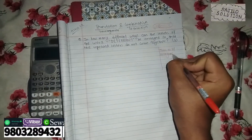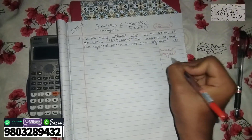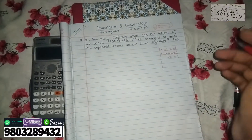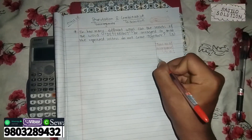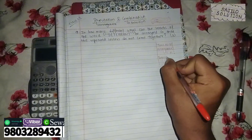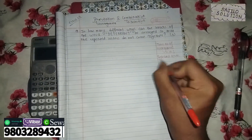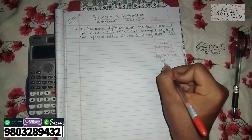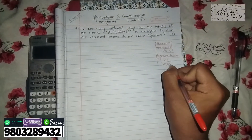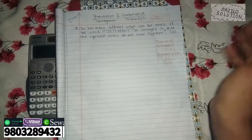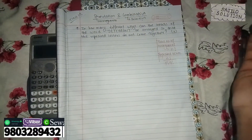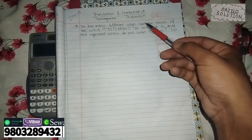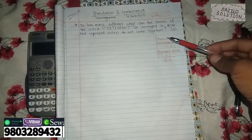The formula is simple: n factorial divided by the factorials of the repeated terms. So the total number of arrangements, when letters are repeated, is n! divided by p! q! r! — dividing by the factorial of each repeated group.